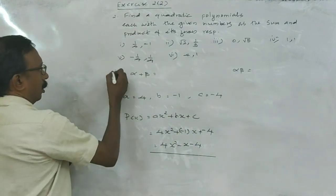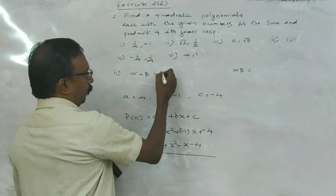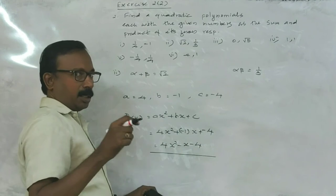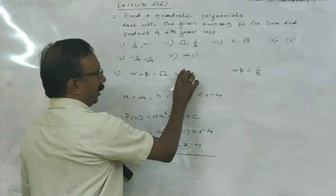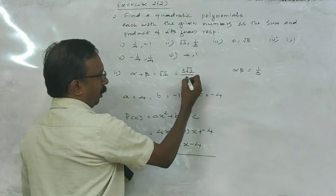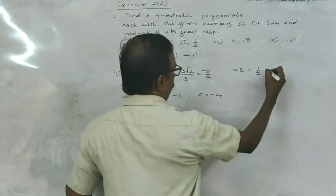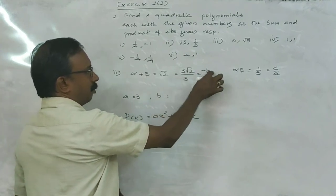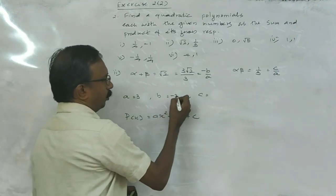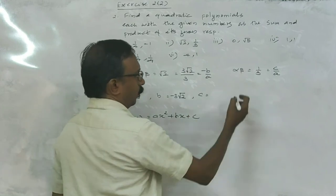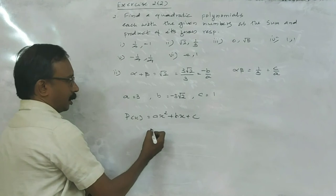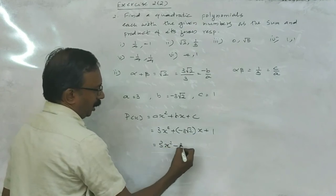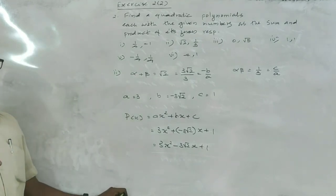In the second polynomial, alpha plus beta is 2 and alpha beta is 1 by 3. To make the denominator 3, multiply numerator and denominator by 3 to get 2 by 3 over 1. This is minus B by A and this is C by A, isn't it? So A is equal to 3, minus B equals 3 times 2 therefore B equals minus 3 root 2, and C equals 1. Therefore the polynomial is 3X squared minus 3 root 2 times X plus 1.